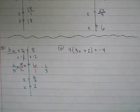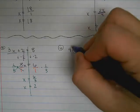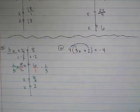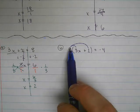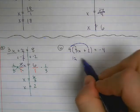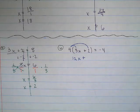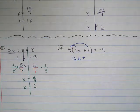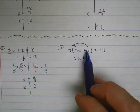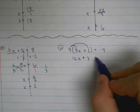The first thing we'll do is our distributive property, that's our rainbows. Meaning to multiply 4 times 3x is 12x, plus, multiplying again, 4 times 2 is 8 equals negative 4.